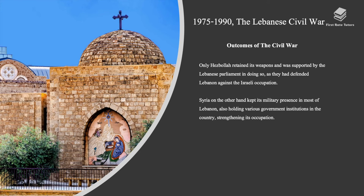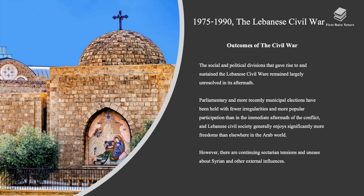Syria, on the other hand, kept its military presence on most of Lebanon, also holding various government institutions in the country, strengthening its occupation. The social and political divisions that gave rise to and sustained the Lebanese civil war remained largely unresolved in its aftermath. Parliamentary and municipal elections have been held with fewer irregularities and more popular participation than in the immediate aftermath of the conflict, and Lebanese civil society generally enjoys significantly more freedoms than elsewhere in the Arab world. However, there are continuing sectarian tensions and unease about Syrian and other external influences.